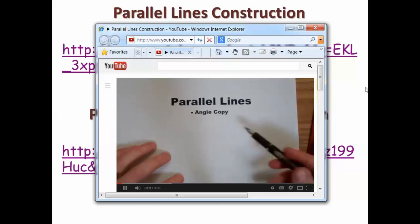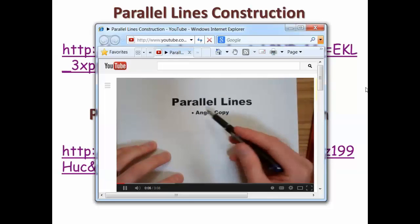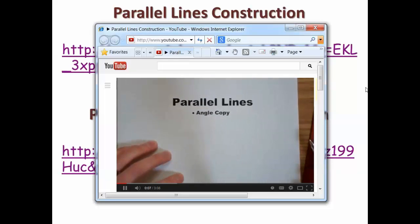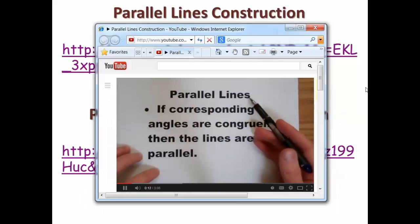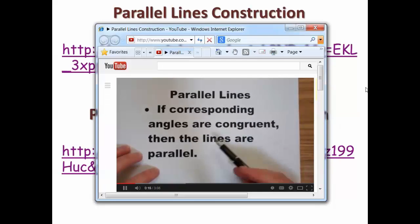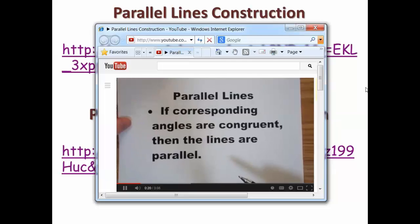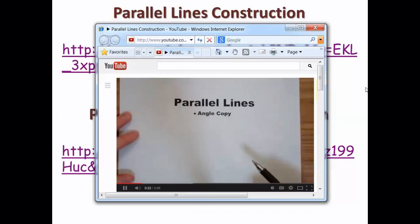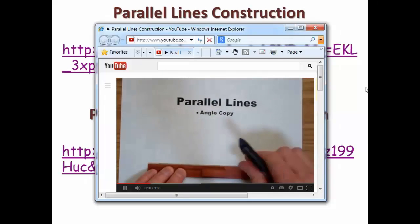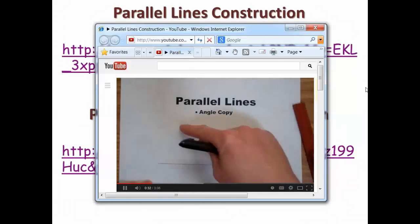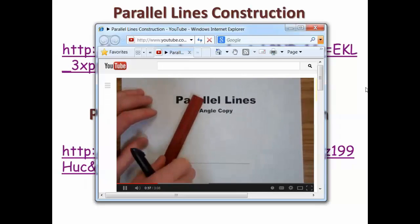In this video I'm going to use an angle copy to construct parallel lines. Recall that in parallel lines cut by a transversal, if the corresponding angles are congruent then the lines are parallel. So I'm going to use this conjecture and the angle copy construction to construct parallel lines. I'm going to start with a line, then I'm going to construct a parallel line somewhere up here. To do that I'm going to first make an angle.